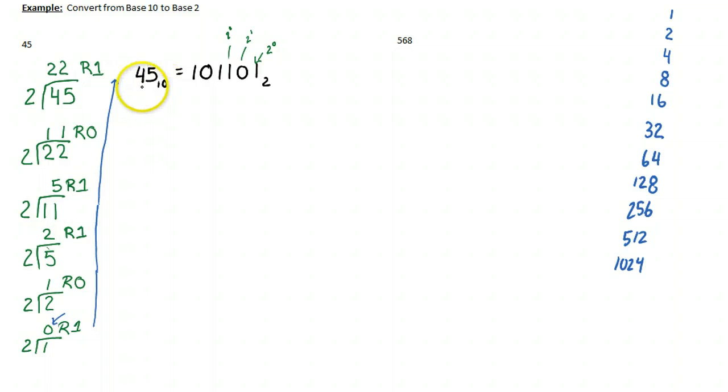So if I start by taking a look at my number, which is 45, and I kind of go down this list, and I find the largest number that goes into 45 that isn't 45, which is 32. So what I can do here is I know that I have to have that switched on.